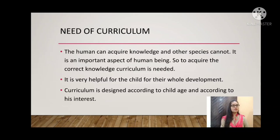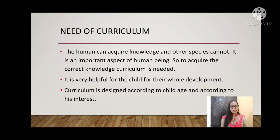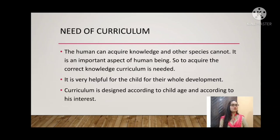The next point is that curriculum is designed according to the child's age and interest. If someone is very young and we give them a very high-level curriculum, they will not learn anything useful. Curriculum is set class by class — if a child is in age 5, the curriculum is appropriate for that age; for college students, a graduate-level curriculum is available. When curriculum matches the child's age and interest, children can engage with the content, understand it, and achieve their educational aims.